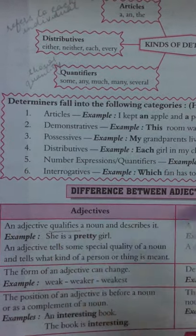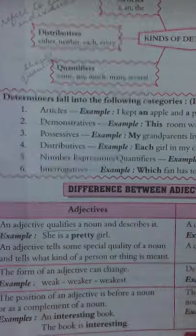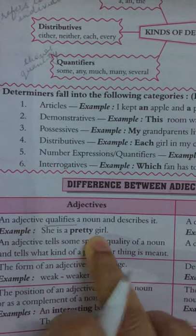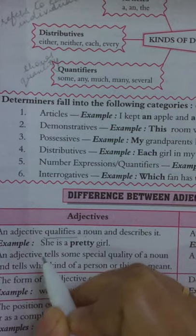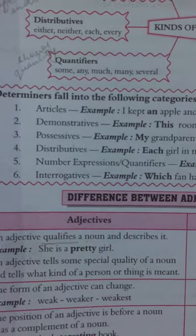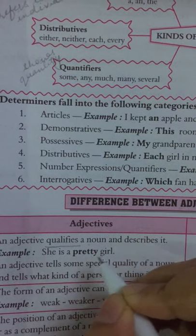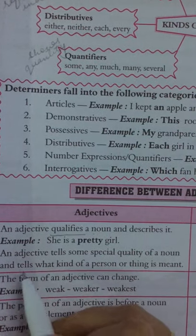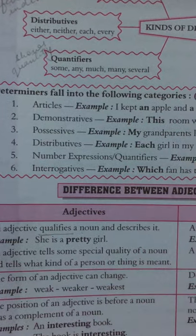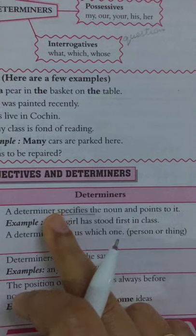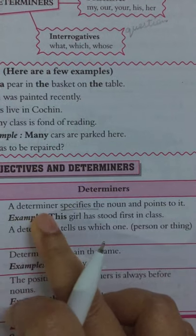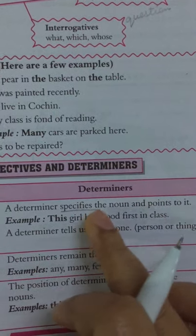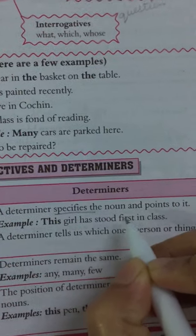An adjective qualifies a noun and describes it — it brings out the quality of a noun. For example, 'She is a pretty girl.' The word 'pretty' brings out the quality of this girl. An adjective tells some special quality of a noun and tells what kind of person or thing is meant. Whereas a determiner specifies the noun, identifies it clearly and definitely, and points to it.